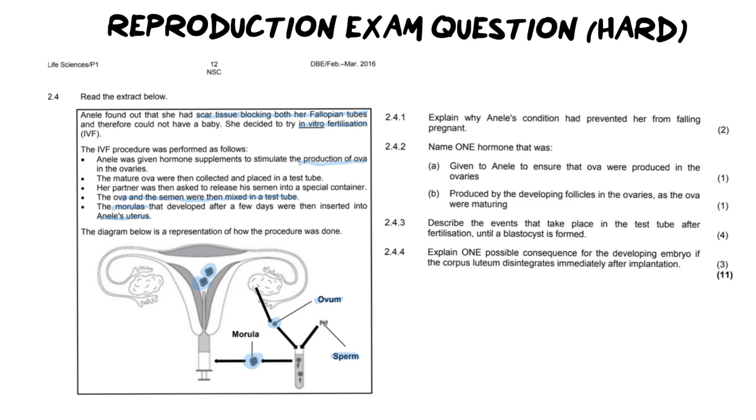So let's look at the questions. And again, the questions are going to start from easy and then progress into more challenging. So number one, explain why Anele's condition had prevented her from falling pregnant. So this actually doesn't start off with the easiest in the sense that if you don't know what her condition causes, you might not know what to say. But let's start with the basics.